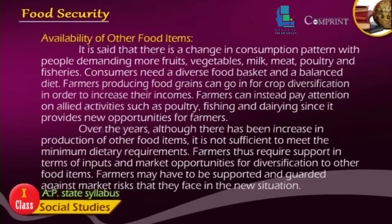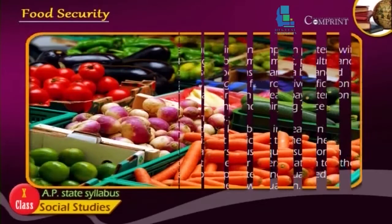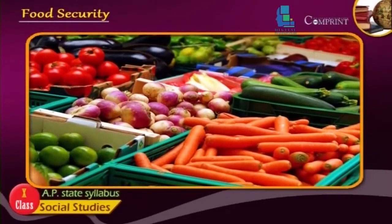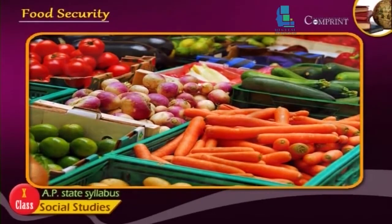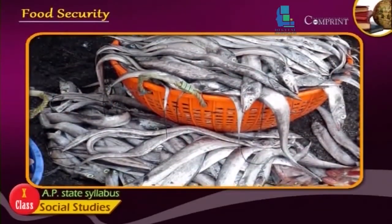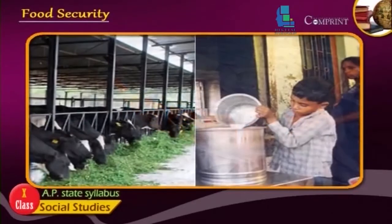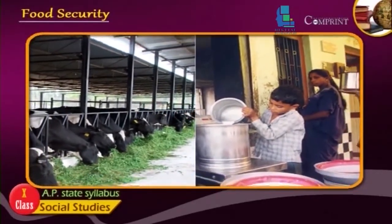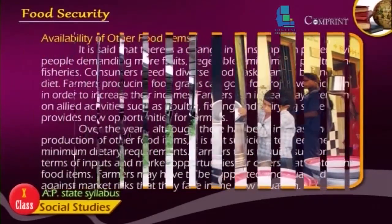There is a change in consumption pattern with people demanding more fruits, vegetables, milk, meat, poultry, and fish. Consumers need a diverse food basket and a balanced diet. Farmers producing food grains can go in for crop diversification in order to increase their incomes. Farmers can also pay attention to allied activities such as poultry, fishing, and dairying, since these provide new opportunities.